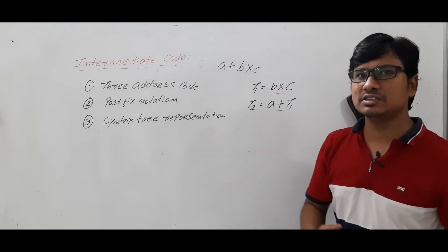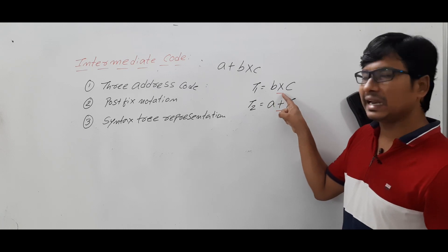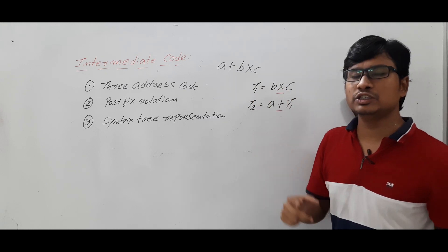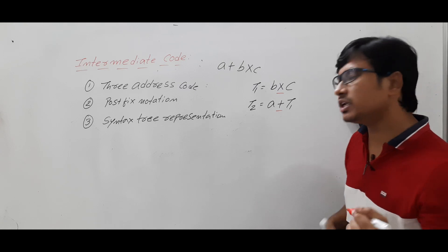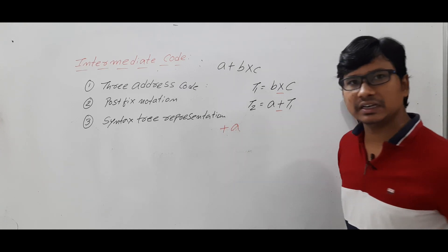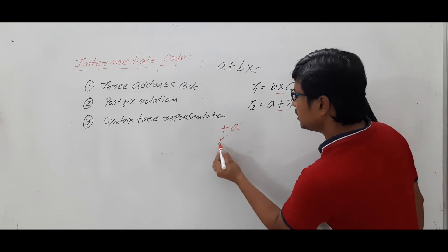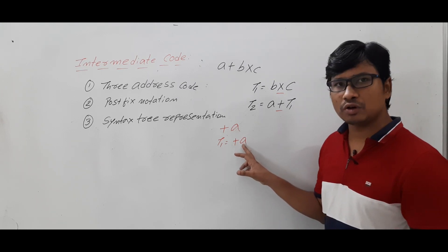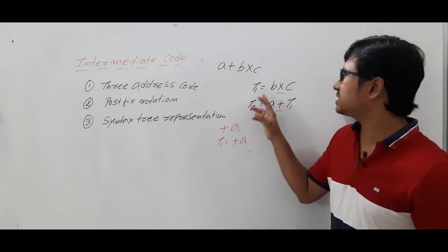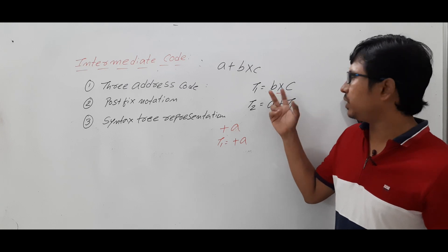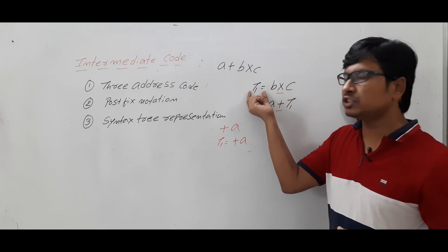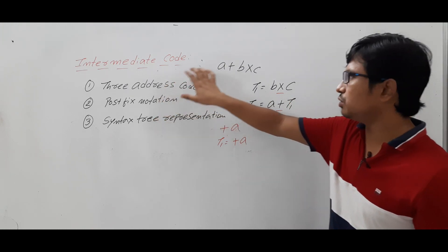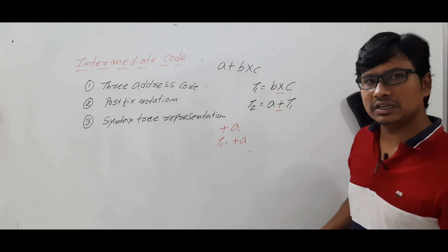Let me clarify these two points again. On the right-hand side you have only one operator, and you have at most two source operands and one destination operand. Now if we are doing a unary operation — for example, just plus a — then we represent it as t1 = +a. In this case you only have one source operand and one destination operand. That is what I mean by a maximum of three operands and only one operator on the right-hand side. This is the three address code and how it represents intermediate code.